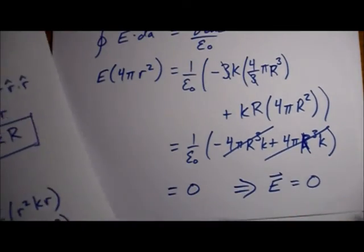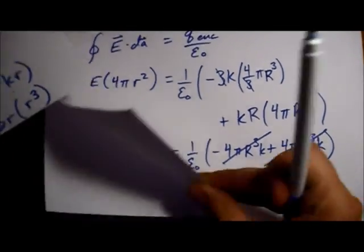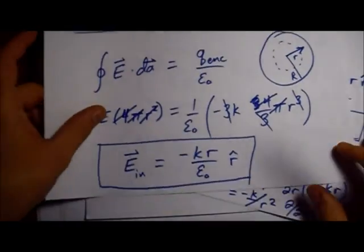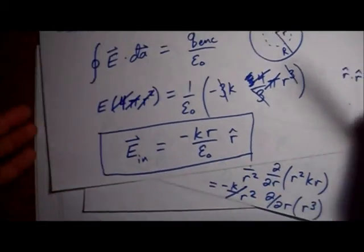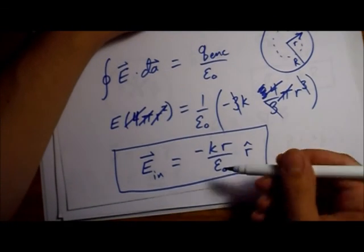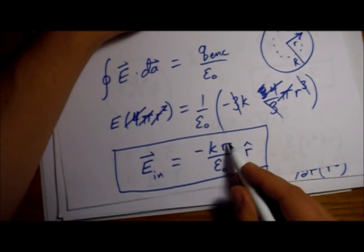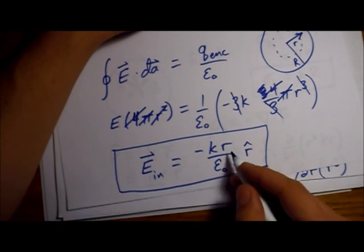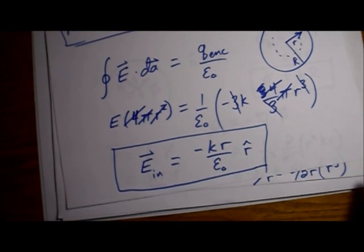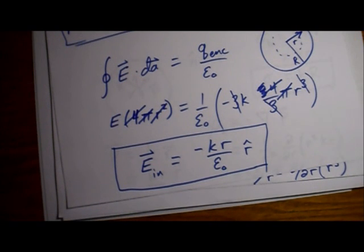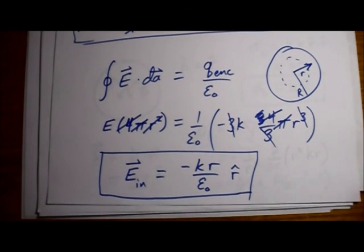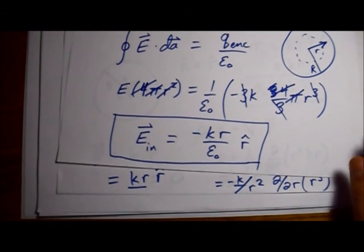So there we have it. Our electric field on the outside is just 0, and our electric field on the inside points inward and increases linearly with small r as we move out from the center of the sphere. Once we pass big R, then the surface charge density enters the equation and cancels the whole thing out.